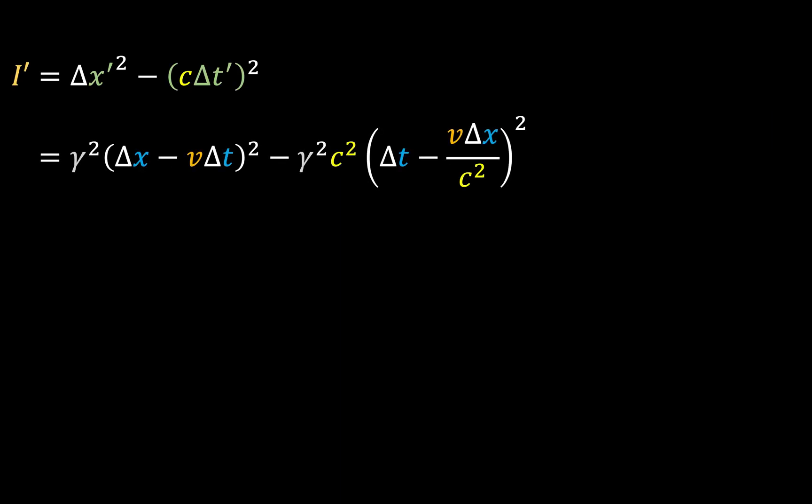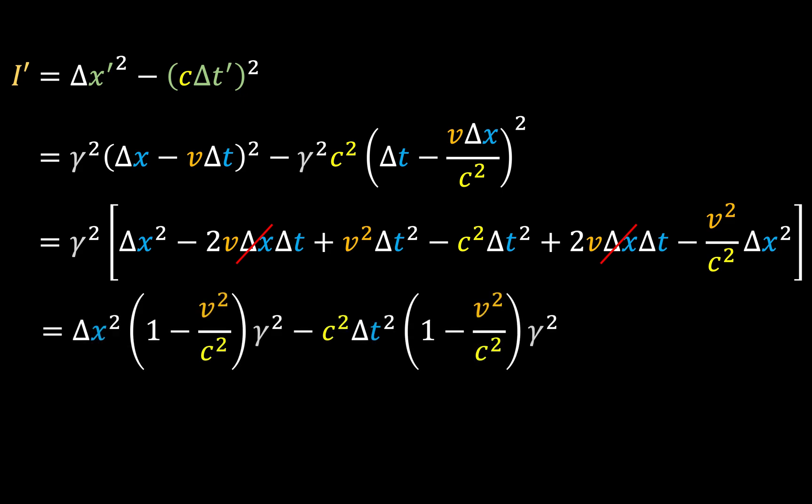So doing that, we get this expression, which when expanded gives us this. Now we can cancel out these terms and then group the delta t and delta x terms to get this.